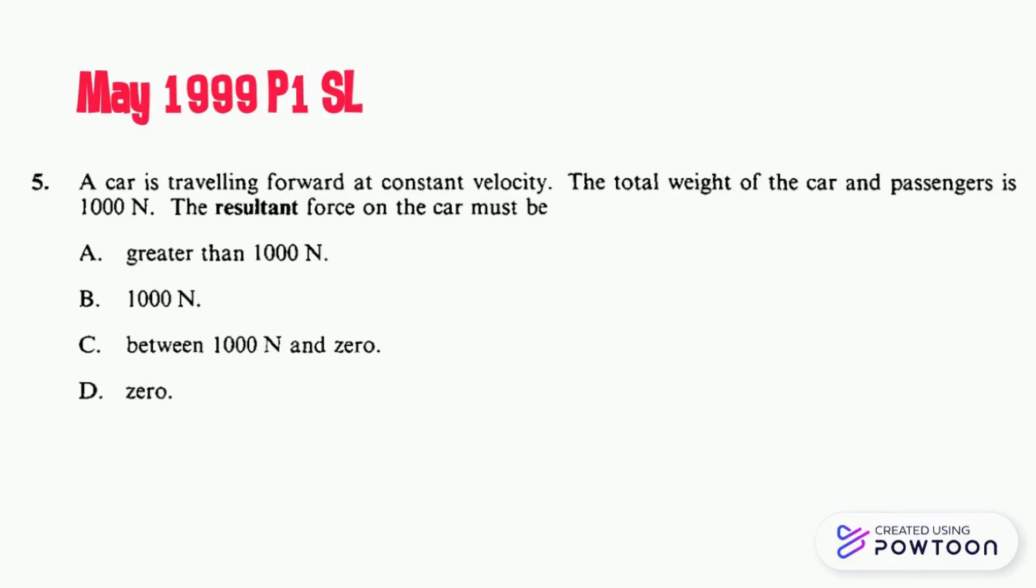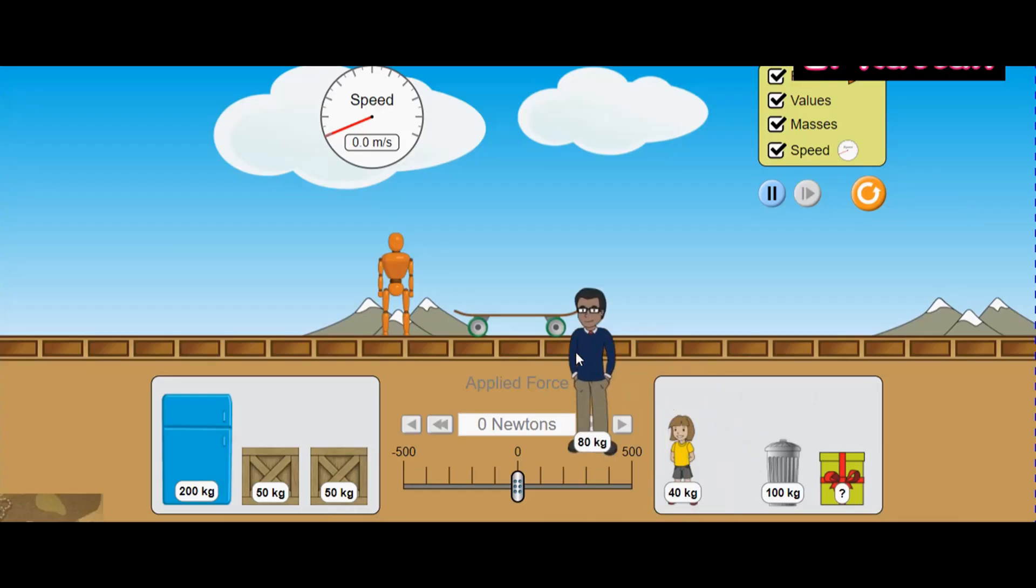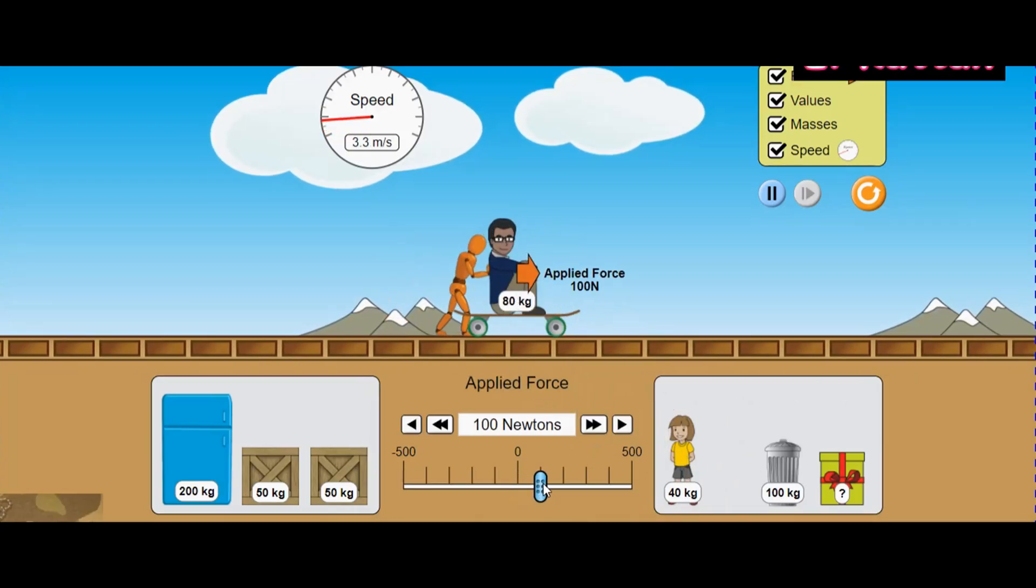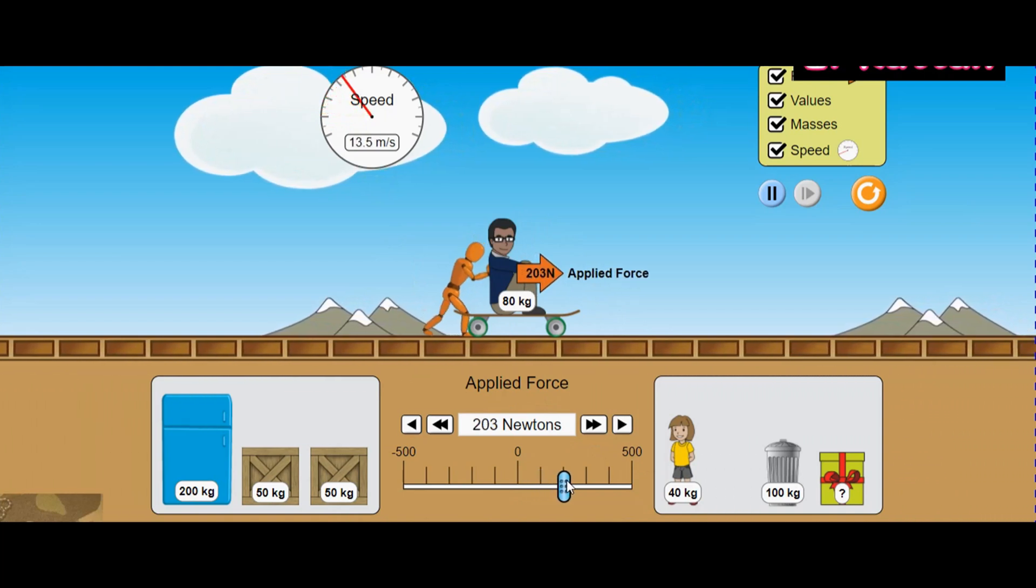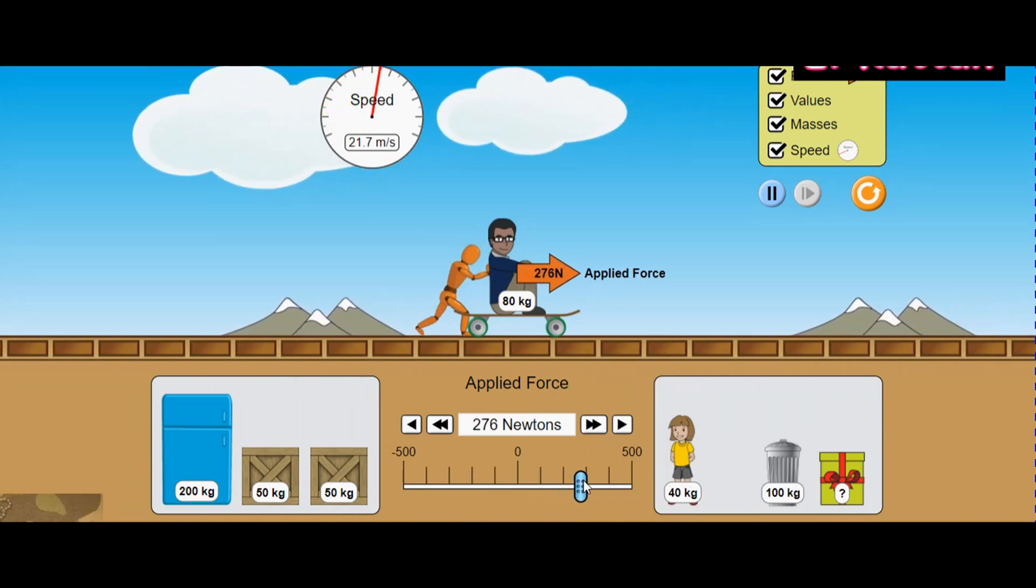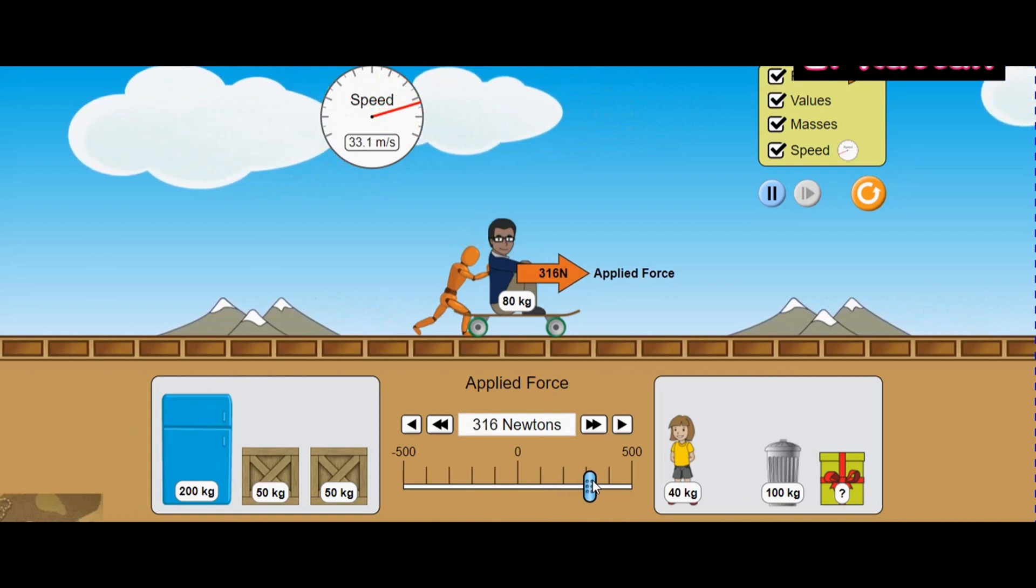One key word which is constant velocity. The man is sitting on the skate while pushing forward. There's a slight increase in resultant force which causes increase in velocity. If there is no more resultant force, velocity becomes constant.